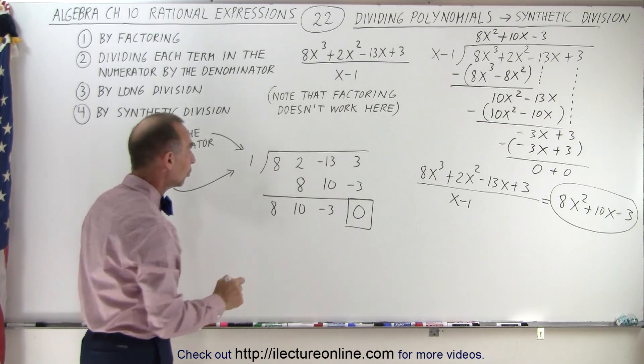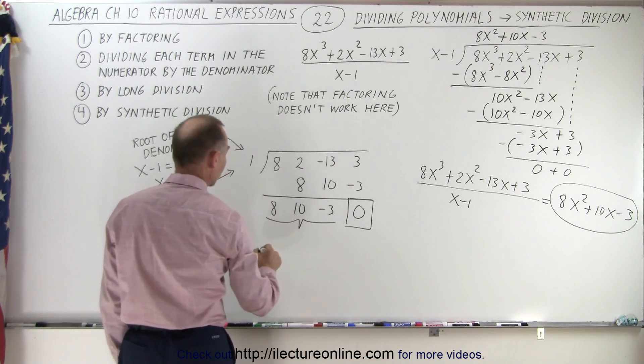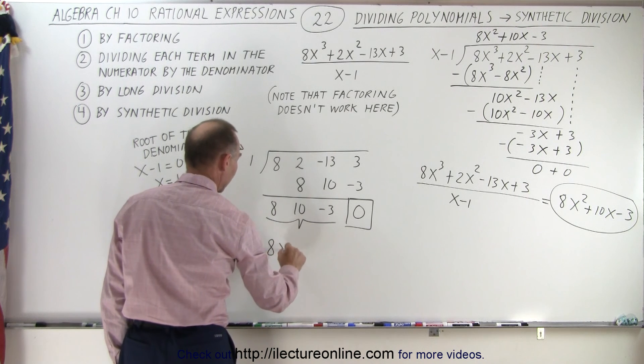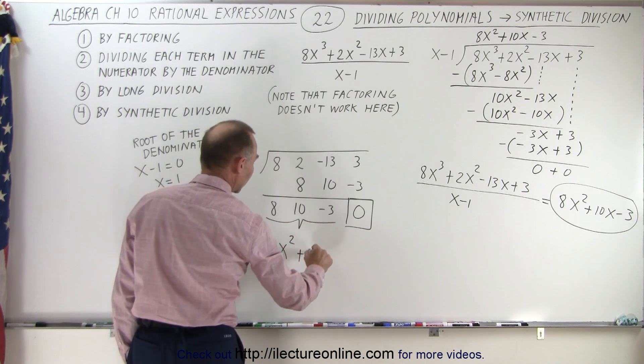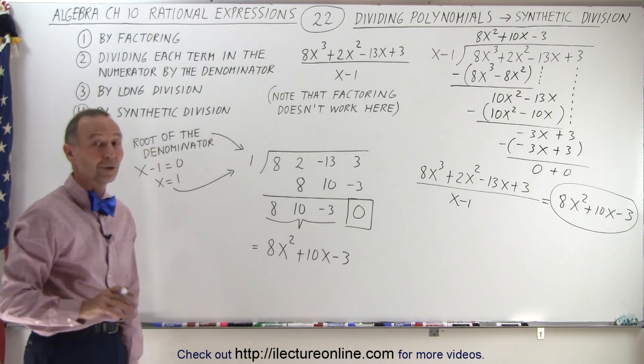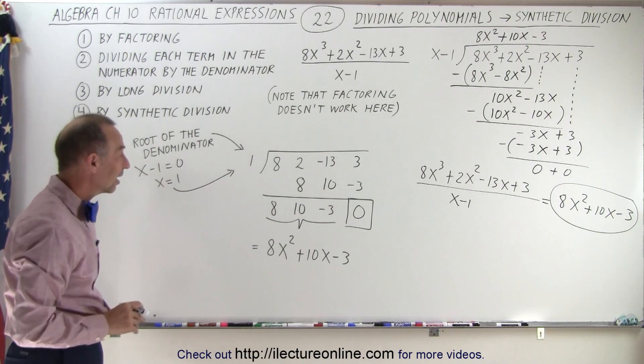Then the result will be, we take these three numbers right here, the result therefore is that this is equal to 8x squared plus 10x minus 3, which is the exact same result that we got before. Notice how slick and easy that is.